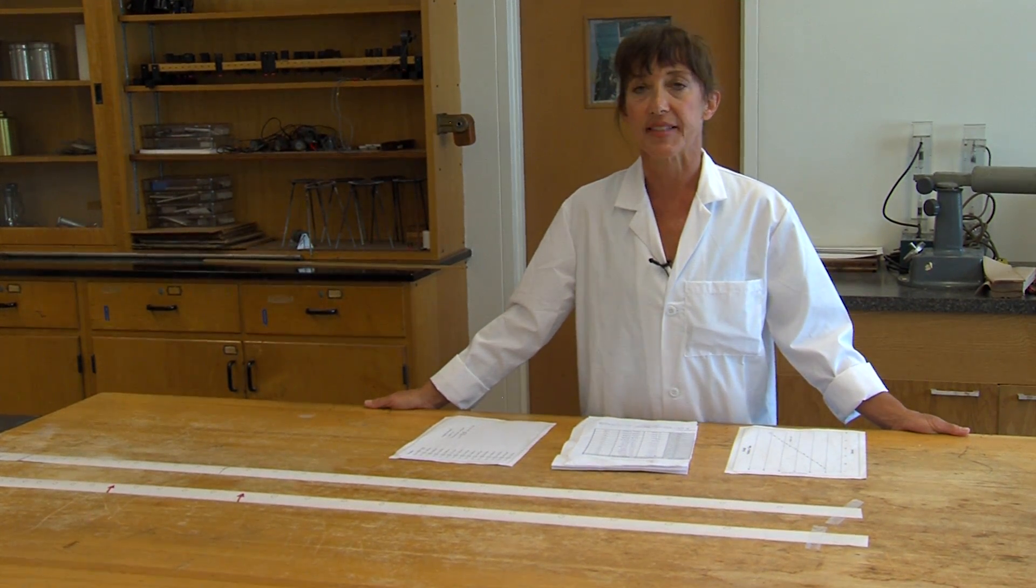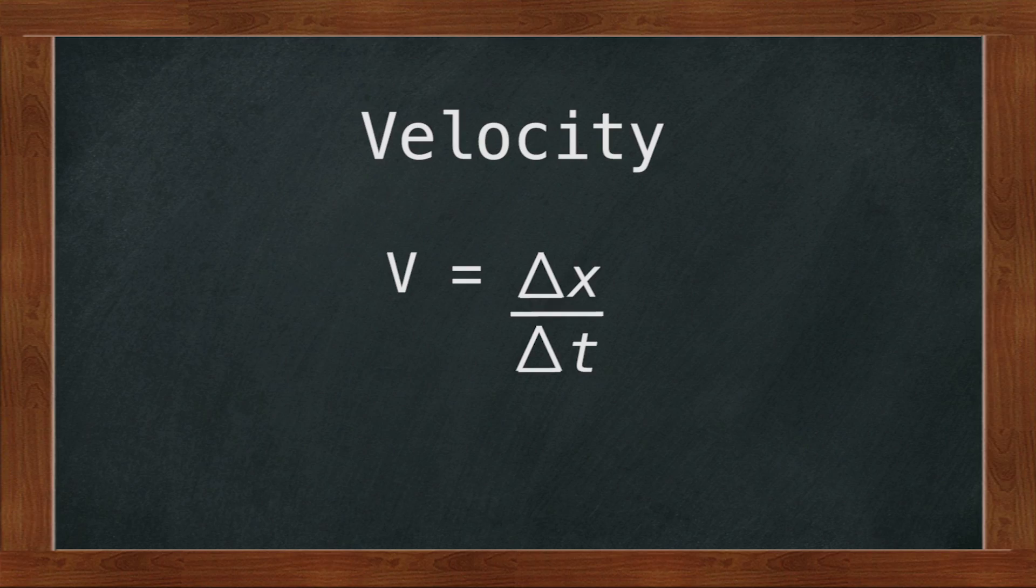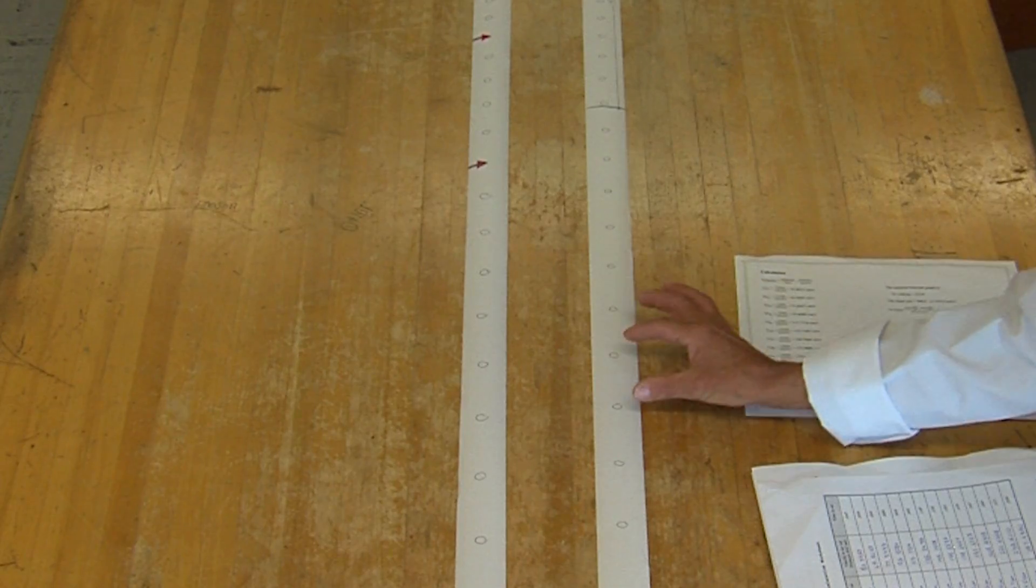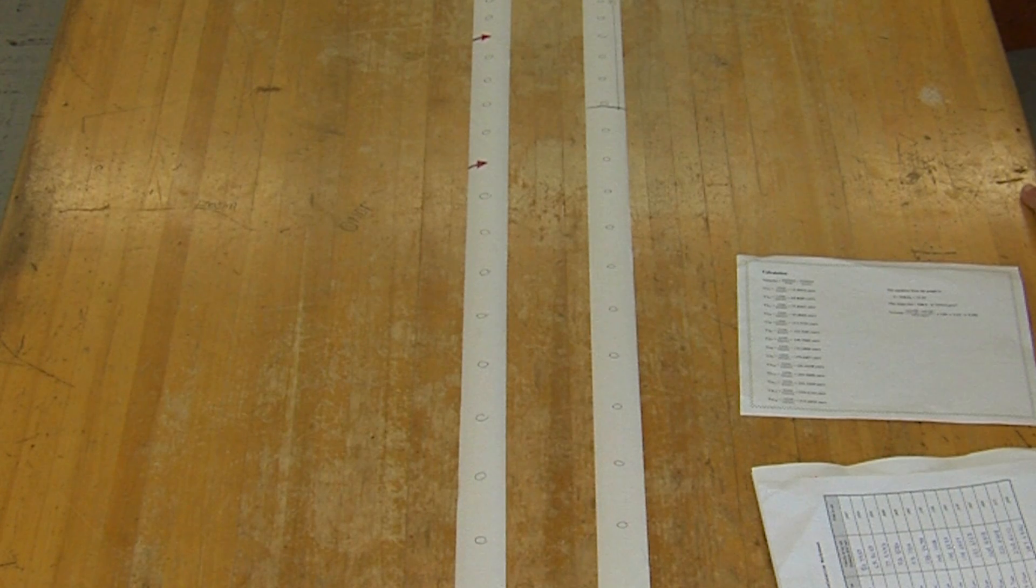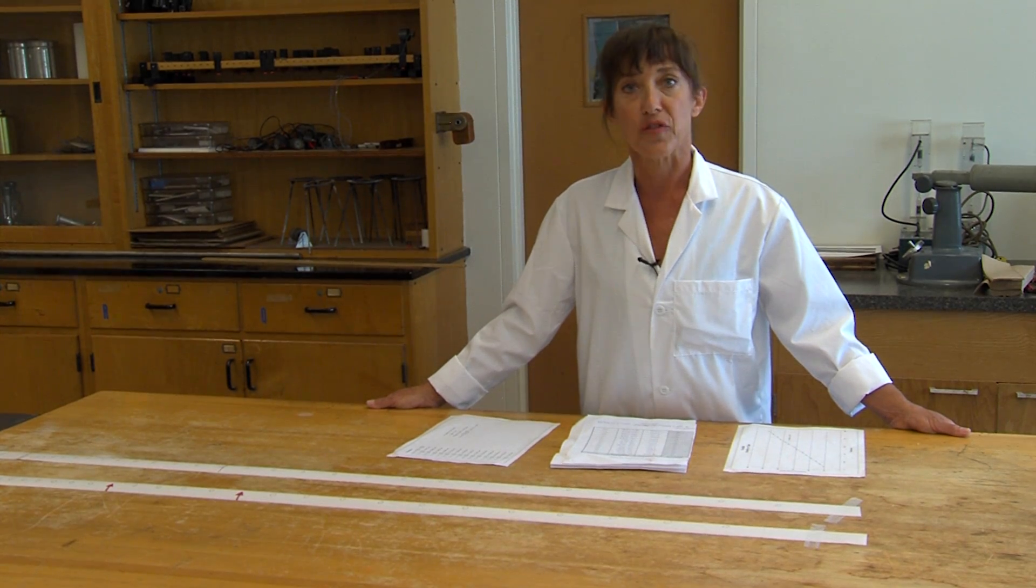Once you've selected your 15 points, you're going to measure the average velocity between each interval. This is a simple calculation. Velocity is defined as change in position over change in time. So all you will do is measure the distance between them and divide by that time interval, which as we've established is 1/60th of a second. You will do this for 15 consecutive points and arrive at 14 values for velocity.